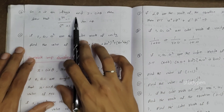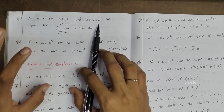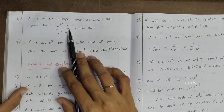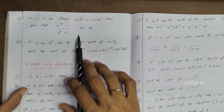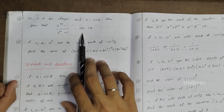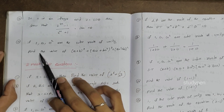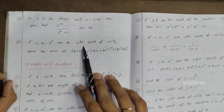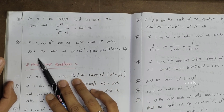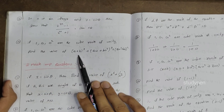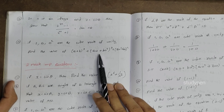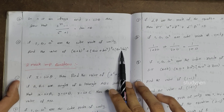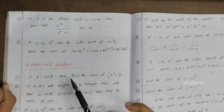Next: if n is an integer and z = cis(θ), then show that (z^(2n) − 1) / (z^(2n) + 1) = i tan(nθ). And: if 1, ω, ω² are the cube roots of unity, find the value of (a + b)³ + (aω + bω²)³ + (aω² + bω)².